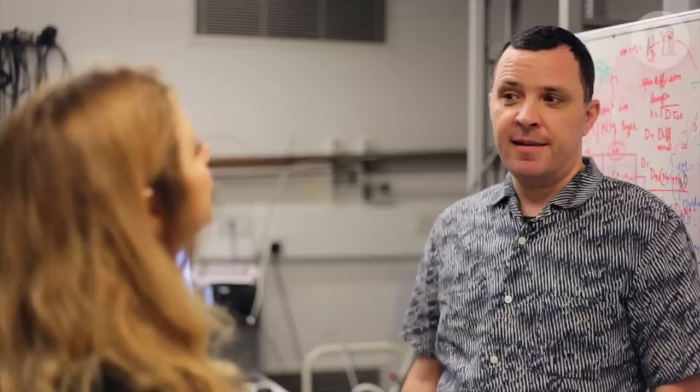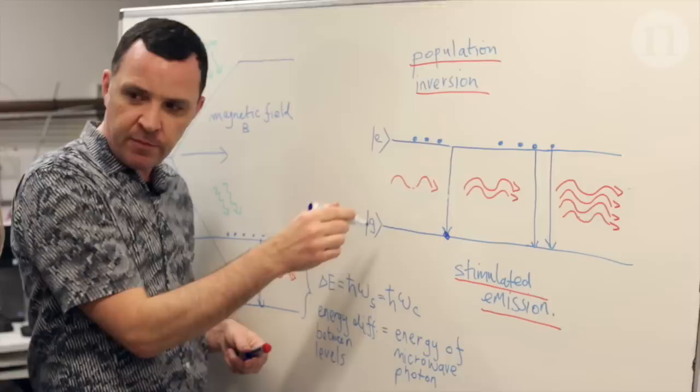I'm Jonathan Breeze, I'm a Research Fellow at Imperial College London and I've been working on room temperature masers for the past 8 years. Recently we managed to demonstrate a continuous room temperature maser that uses diamonds.